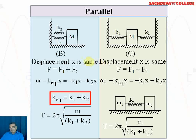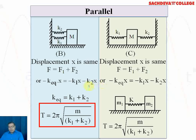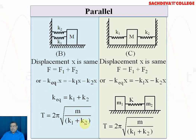The equivalent spring constant is k = k1 + k2. The time period is T = 2π√(m/k), so T = 2π√(m/(k1+k2)). The same situation continues in Figure C.